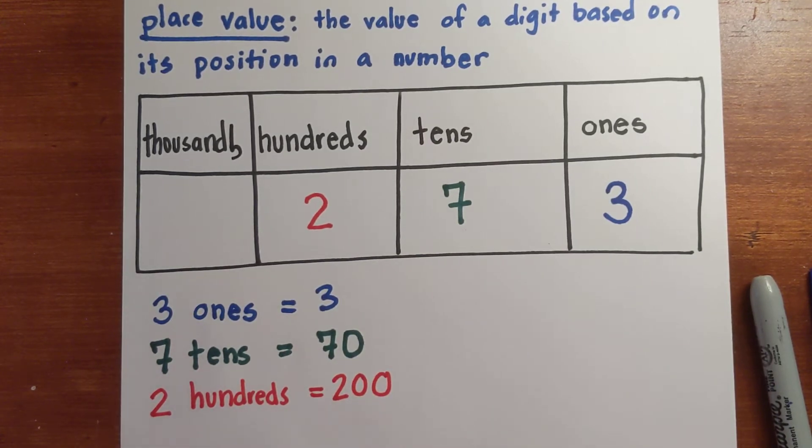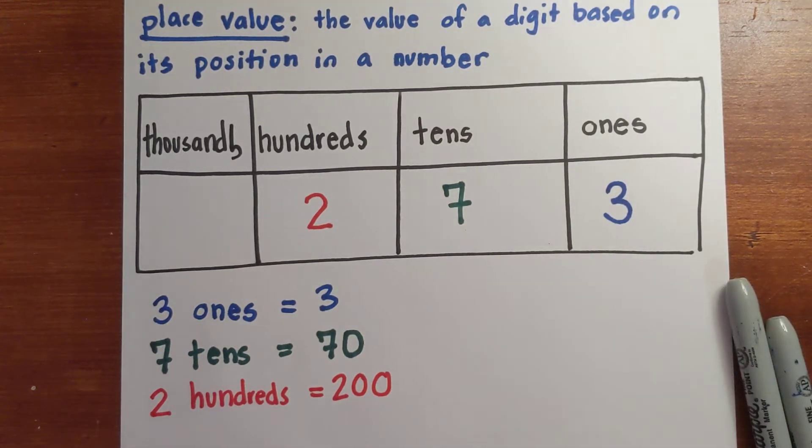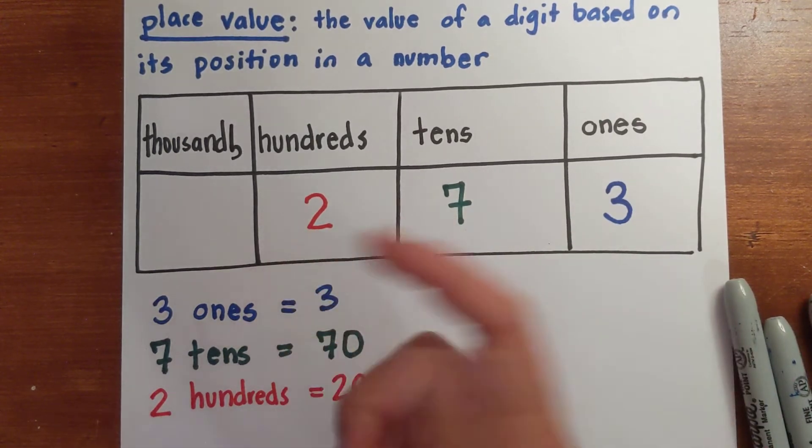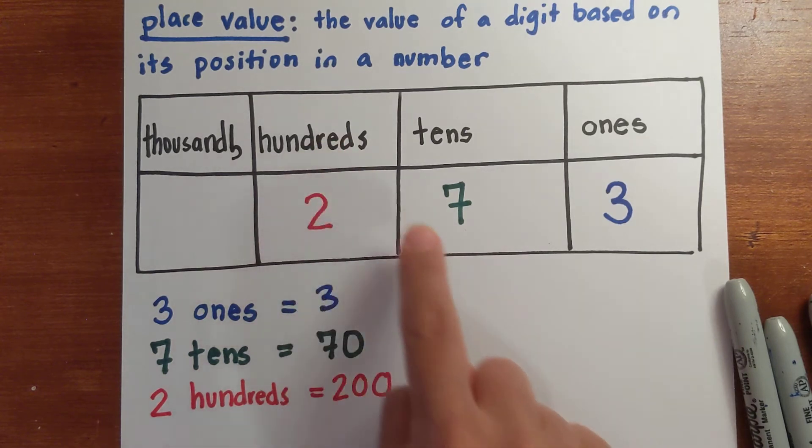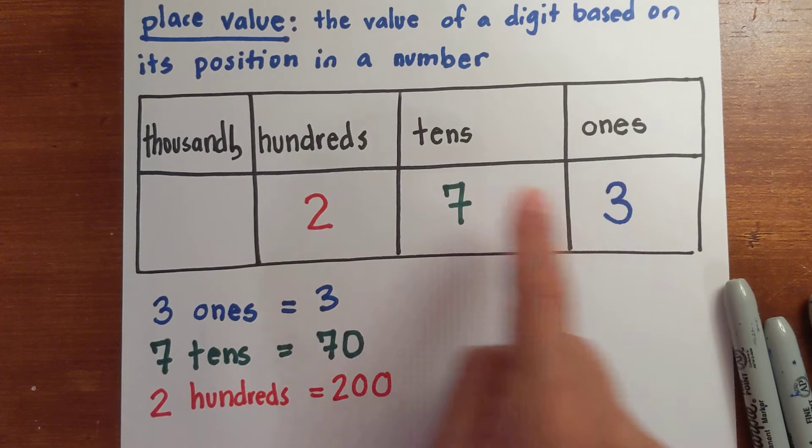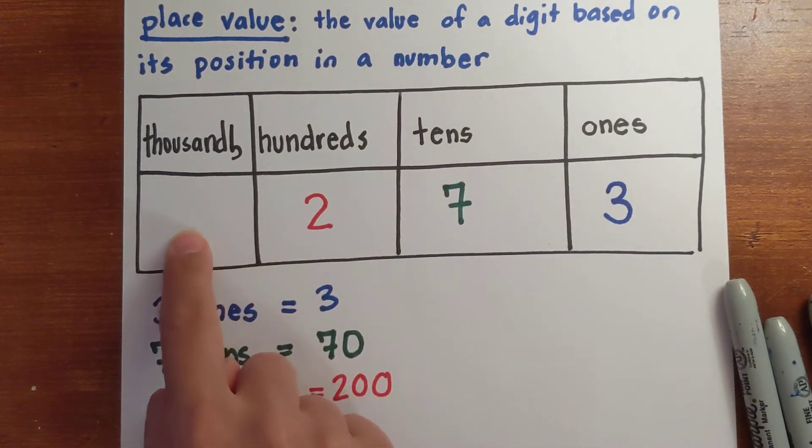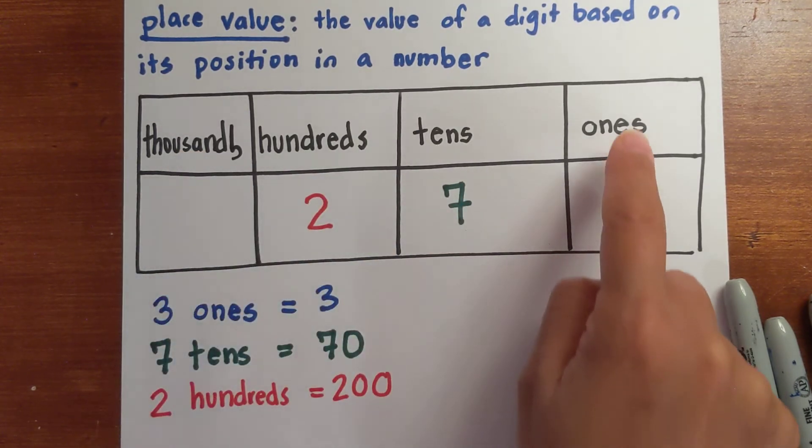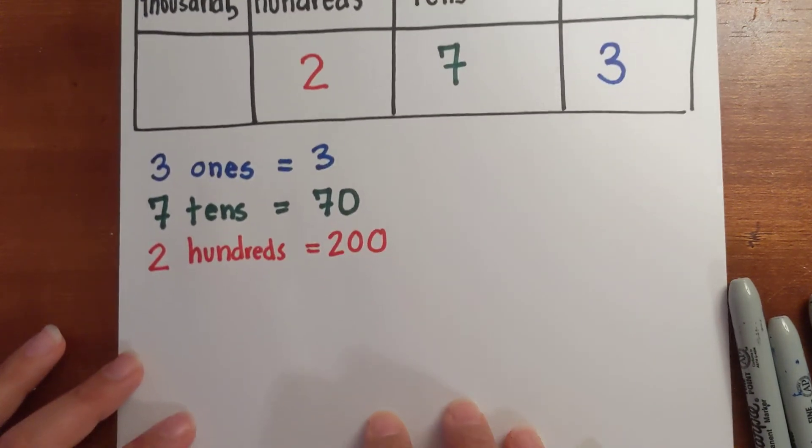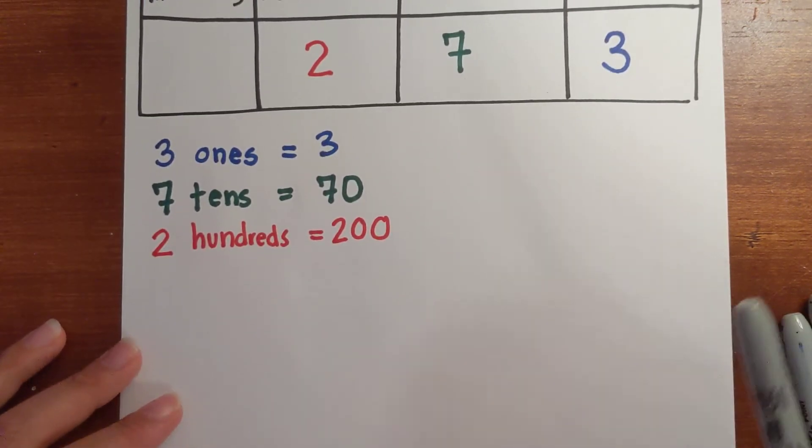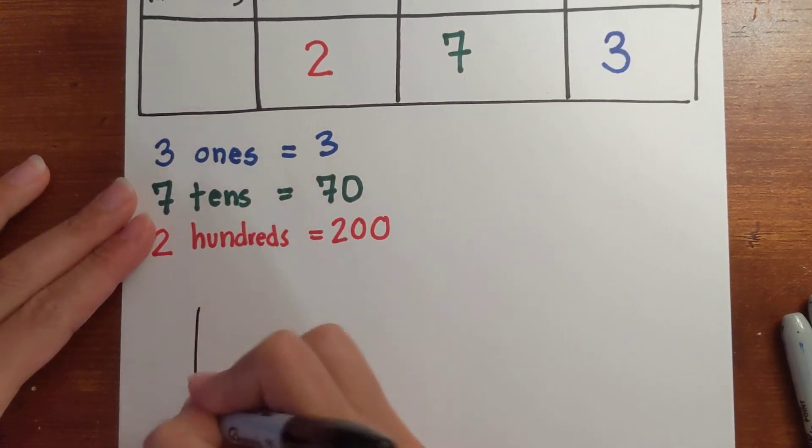So each place value represents a different value, and depending on where I place a digit, that value can change. If I place this two right here, it would not be two hundreds, it would be two tens or twenty. If I place this three over here, it would be three thousands, not three ones, but three thousands, which is a very different number.